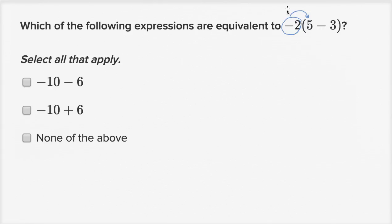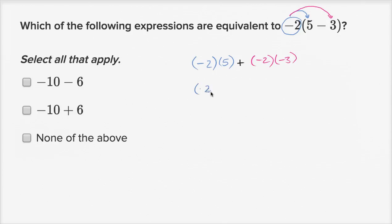So what I could do is distribute this negative two. I could multiply it times five, and then by negative three. I could view it as negative two times five, plus negative two times negative three — or I could view it as negative two times five, minus negative two times positive three. I either wrote the negative with the three and kept a positive, or I wrote the minus separately and made this a positive three. But these are equivalent — either way, I've distributed this negative two.